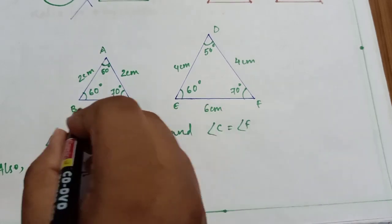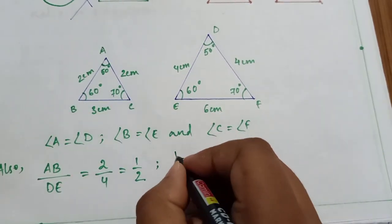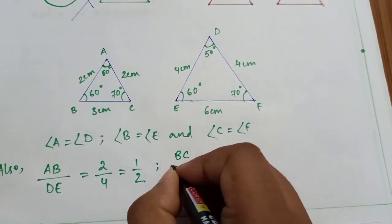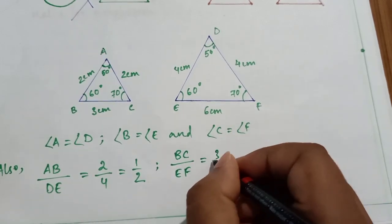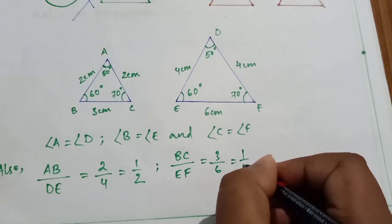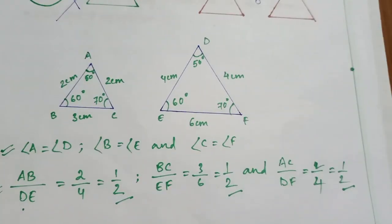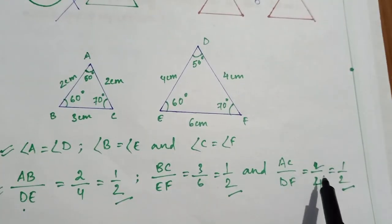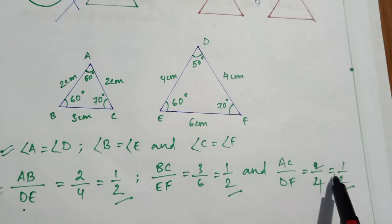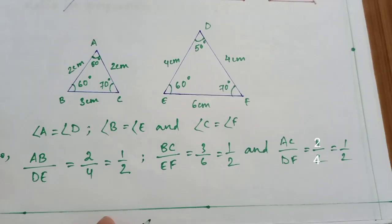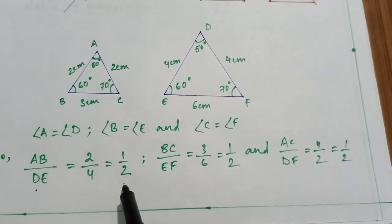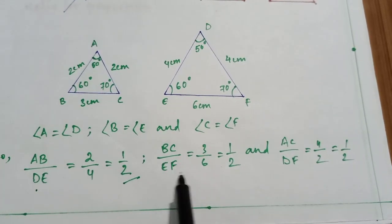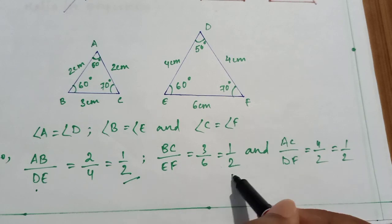Again, BC by EF equals 3 by 6, which is equal to 1 by 2. And AC by DF is equal to 2 by 4, which is equal to 1 by 2. So here we can see AB by DE is equal to 1 by 2, BC by EF is equal to 1 by 2.